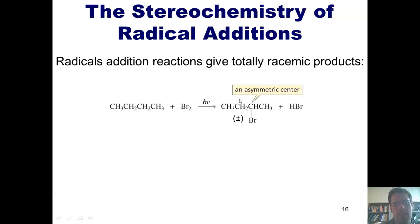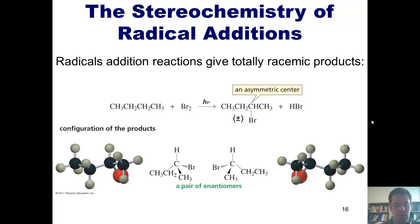This is a stereocenter. However, I have to stress that this product is going to be formed with both enantiomers present in a 50-50 mixture, i.e. a racemic mixture, as indicated in this picture here, both enantiomers being present.